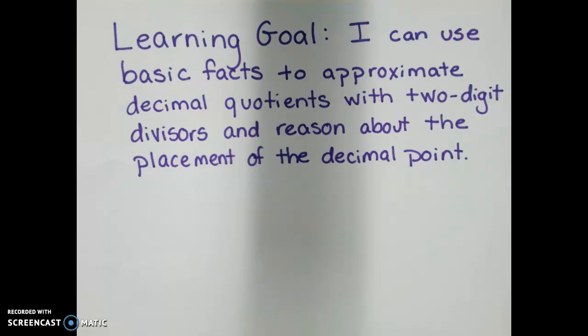So basically what we're going to do is we're going to divide some decimal numbers by a two-digit divisor and estimate what that quotient is going to be and figure out where to put the decimal. So get ready to use your brains. Get your thinking caps on and get a piece of paper and a pencil and write these down while I'm doing them.